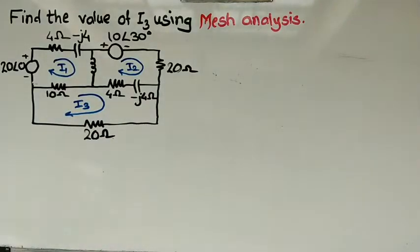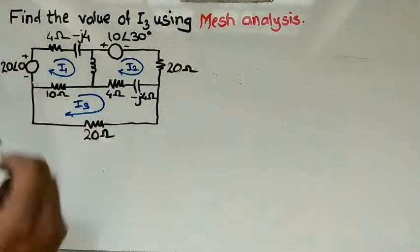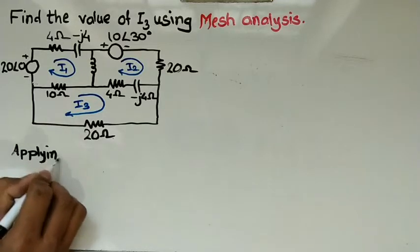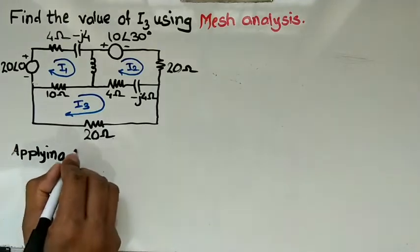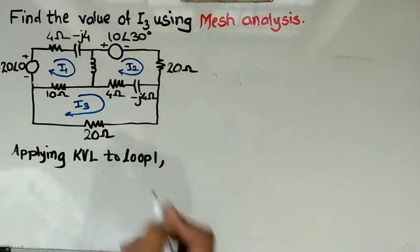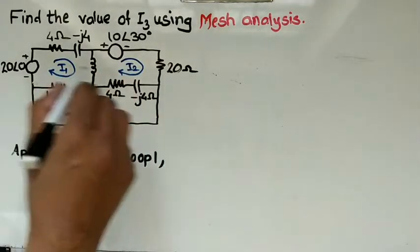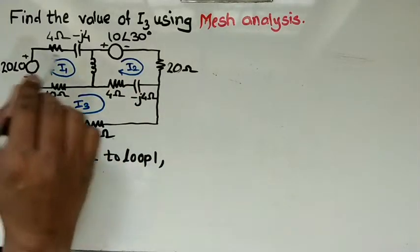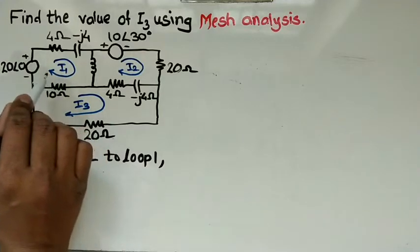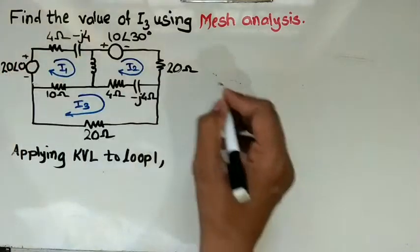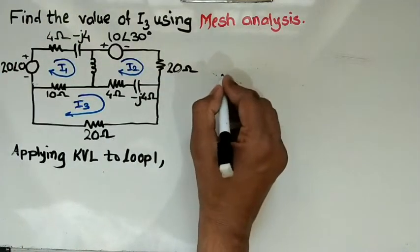We will use mesh analysis. Applying KVL to Loop 1 — you can write loop one or mesh one. This is mesh individually. This is I1, this is I2, and this is I3. Loop one's current flowing through it is I1. To apply mesh analysis, this is your 4 ohm value.